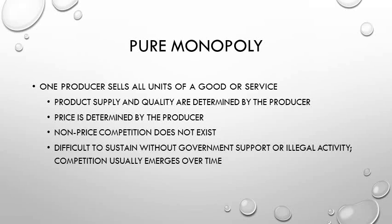Finally, there's pure monopoly. This is where one producer sells all the units of a good or service. The product supply, quality, and price are all determined by the producer, who will try to charge as high a price as the market will support — as high as consumers will pay. Non-price competition doesn't exist because there's only one producer. This type of market is difficult to sustain over time without government support or illegal activity, because competition will usually emerge even in a pure monopoly.